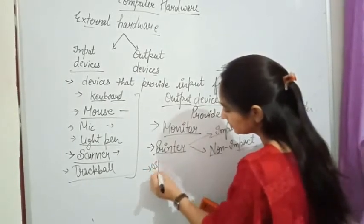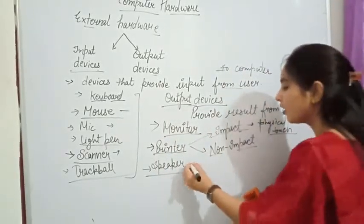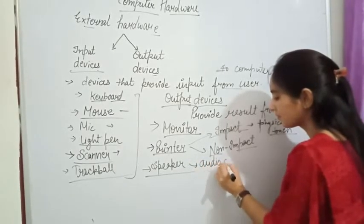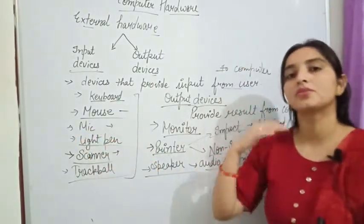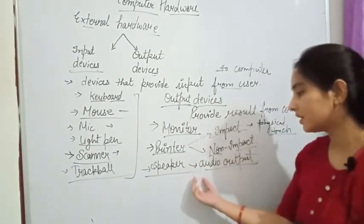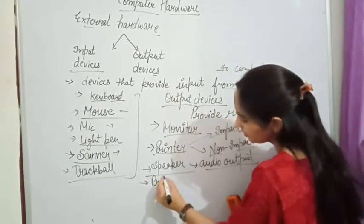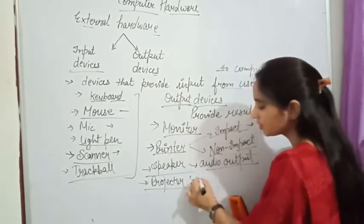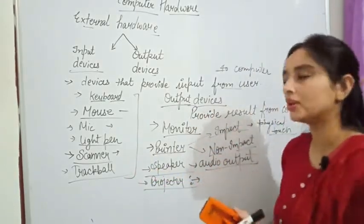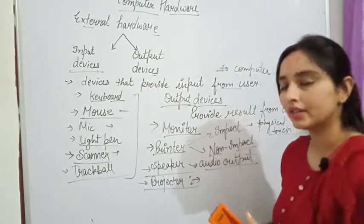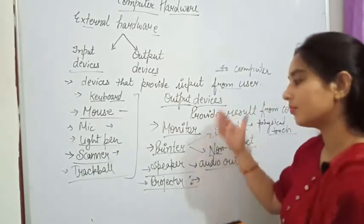Next we have the speaker. A speaker provides audio output to users — it is opposite to the MIC, which provides audio input to the computer. Next, we have the projector, which is an output device that projects a computer or laptop screen onto a big white screen, displaying the same content using laser lights.